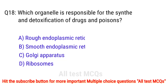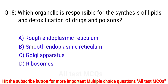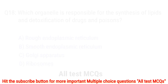Question number 18. Which organelle is responsible for the synthesis of lipids and detoxification of drugs and poisons? The right answer is option B: smooth endoplasmic reticulum.